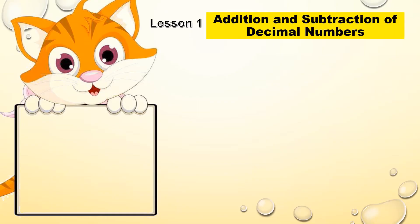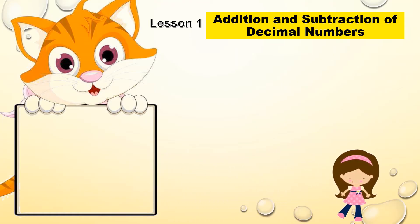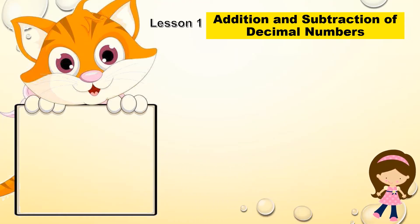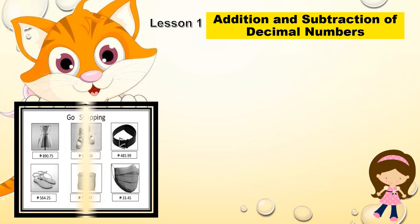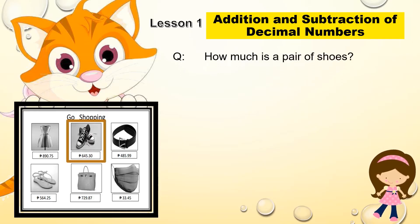Now let's begin with Lesson 1: Addition and Subtraction of Decimal Numbers. Here is Gina, and Gina is going to shop today. Look at the items that Gina might be buying. Look at the shoes — a pair of shoes costs 645 pesos and 30 centavos.